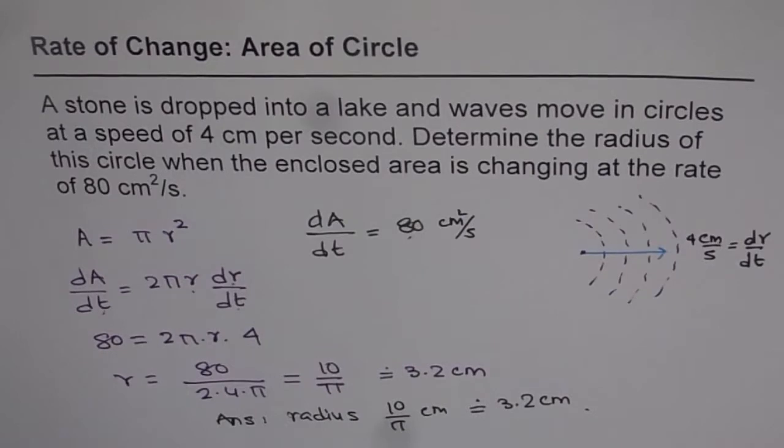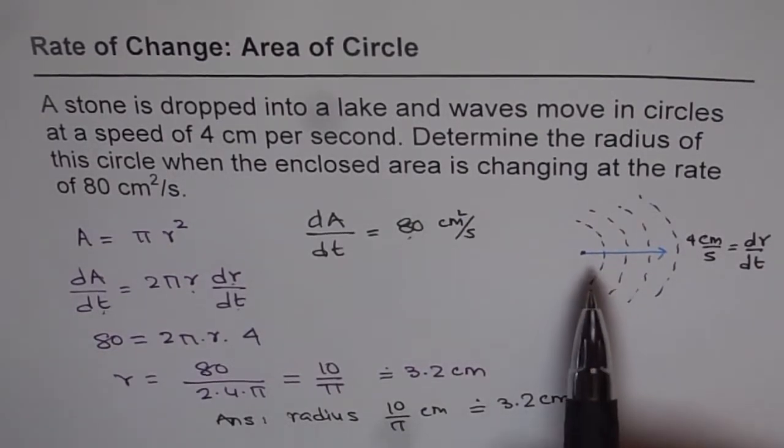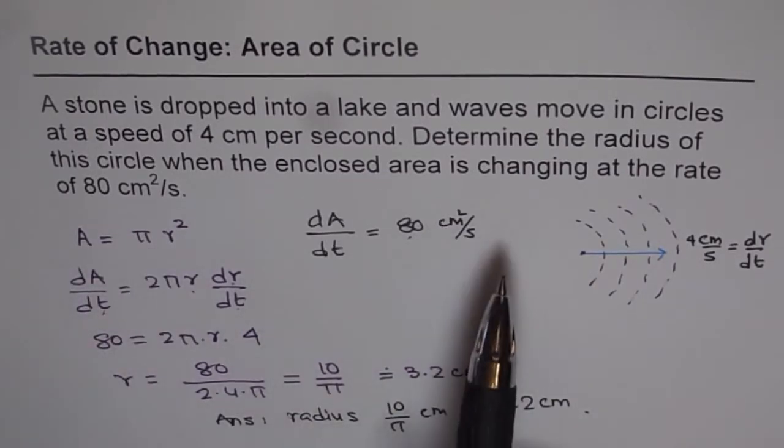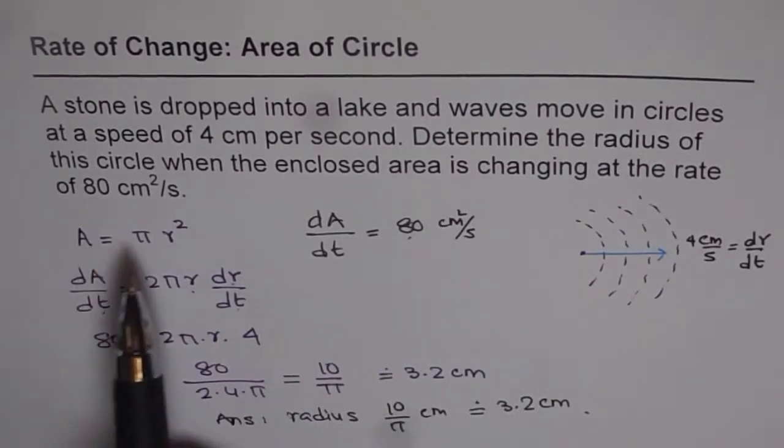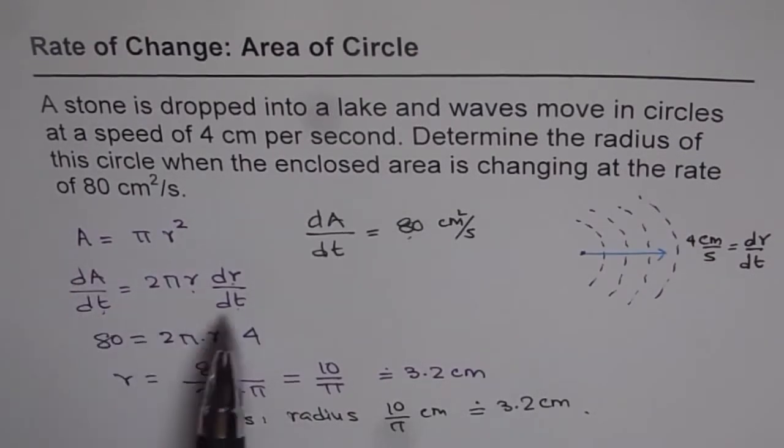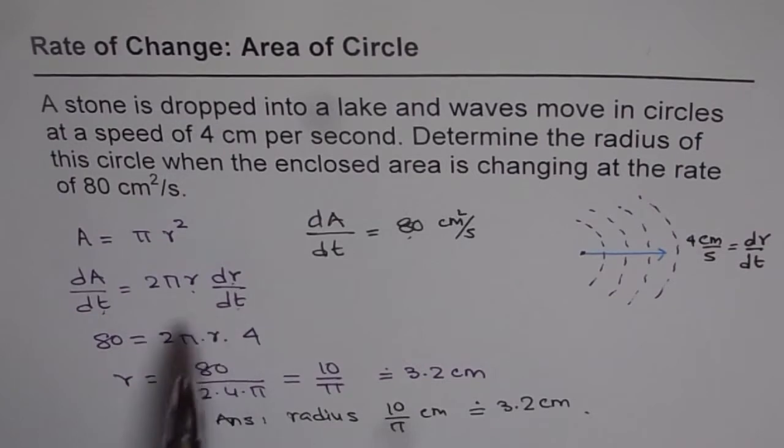I hope you understand this strategy. The strategy is: relate area with radius, and since we are given rate of change of area and rate of change of radius with respect to time, differentiate with respect to time and substitute the values given to you to find the unknown. Simple as that. Thank you.